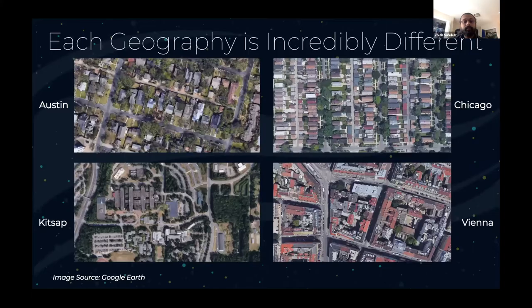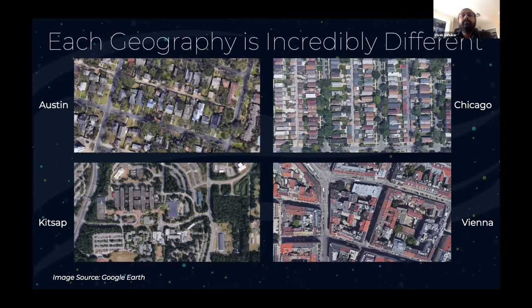Why do we see a drop in performance across different regions? Each geography is incredibly different. Looking at city images for four cities pulled from Google Earth at 500-meter camera height: in Austin, buildings are widely spaced compared to Chicago and Vienna where buildings are more tightly spaced. Kitsap has more green cover. In Vienna, the rooftops have a distinct red texture. So color, gradient, structure, and how buildings are spaced — everything is different across all geographies.